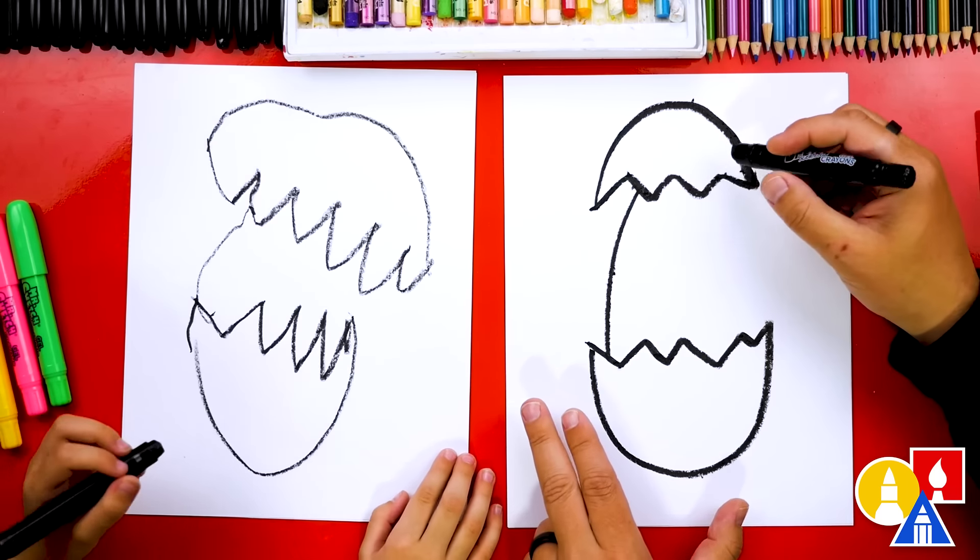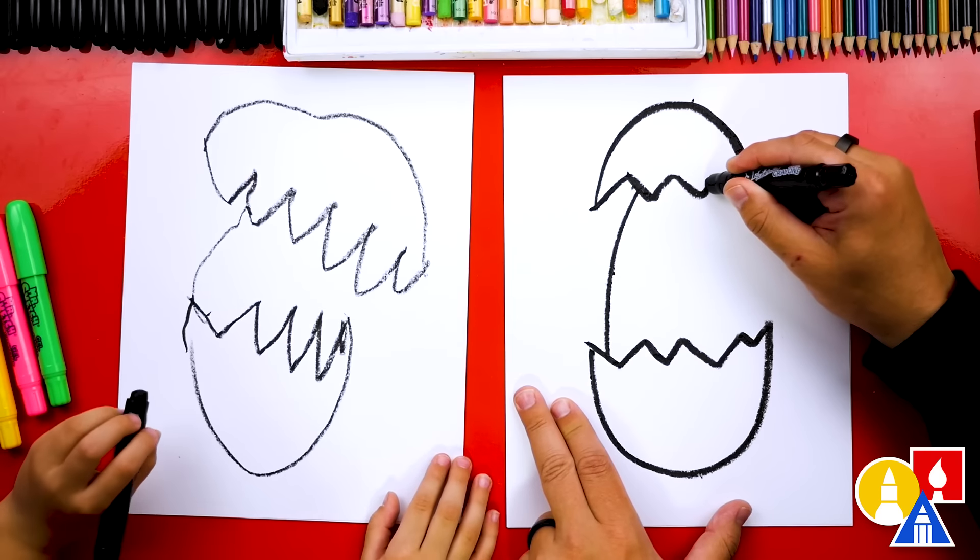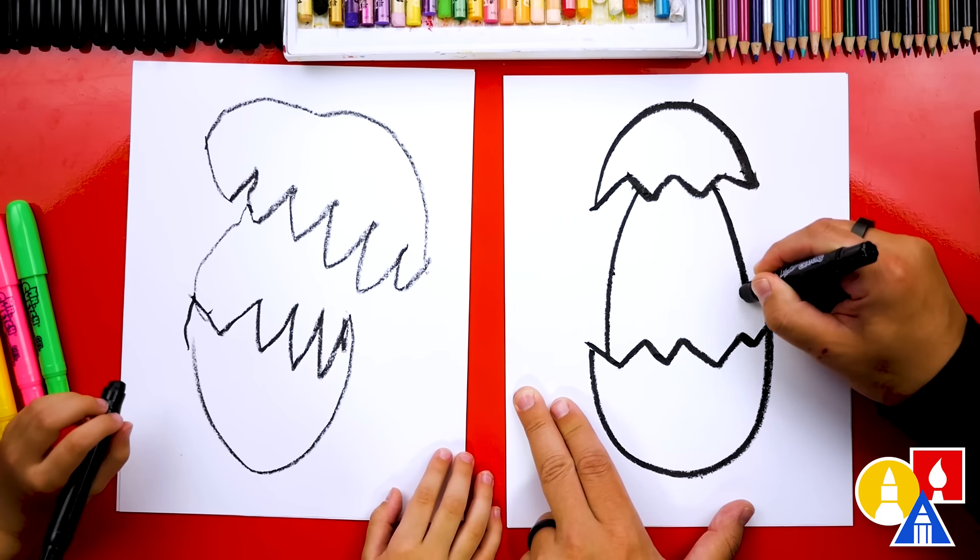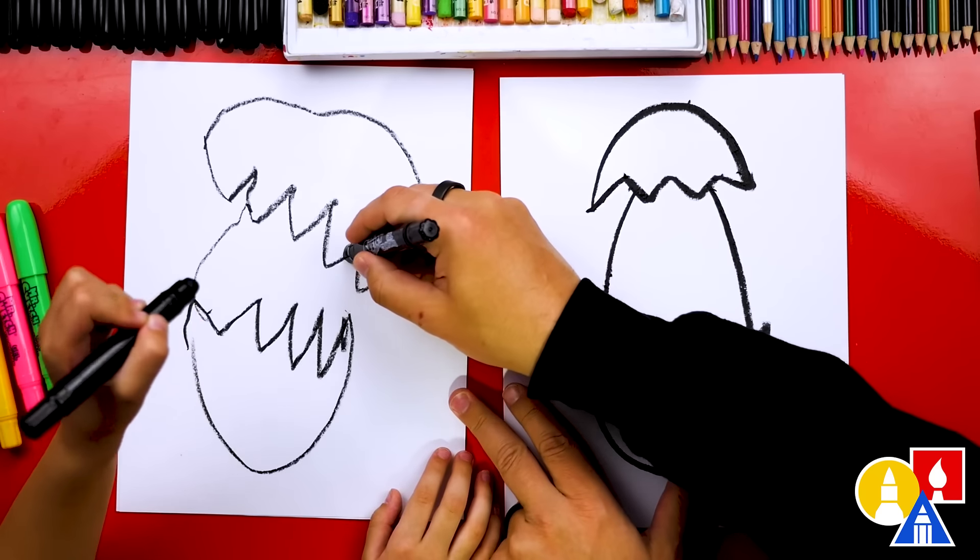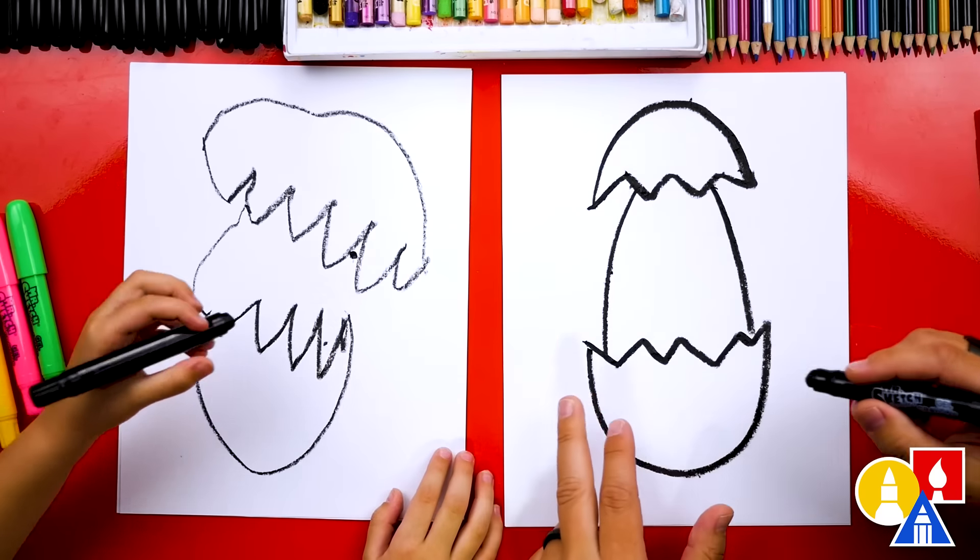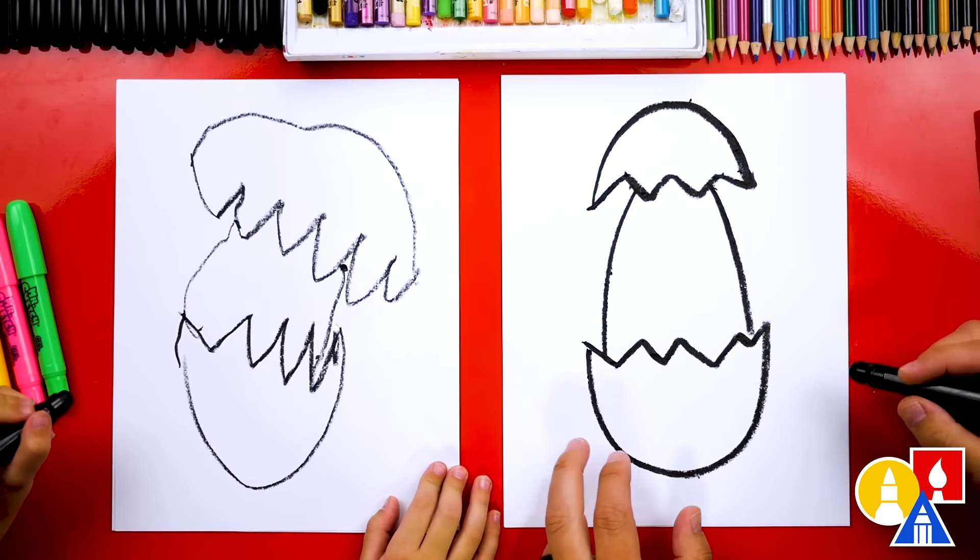Yeah. Then we're going to draw the other side of our baby chicken coming down. So we can draw it. You can just draw it right here, coming down to there. Yes. Yes. Okay.